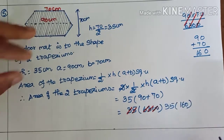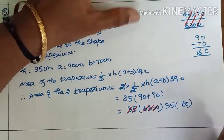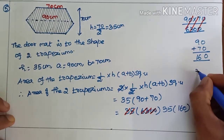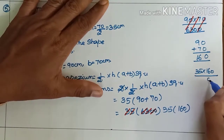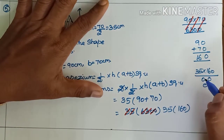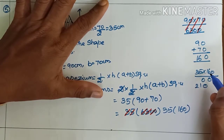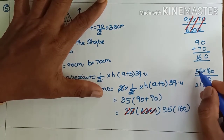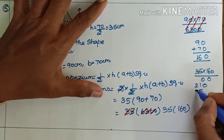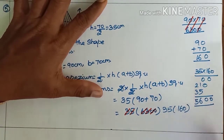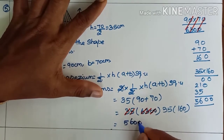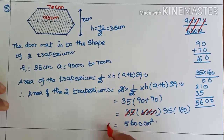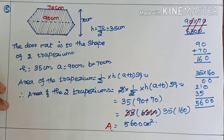35 × 160: multiply to get 5,600. Therefore, the area of the two trapeziums — that is, the area of the doormat — is equal to 5,600 cm².